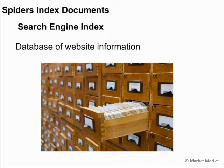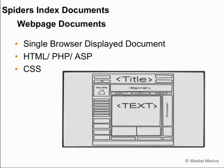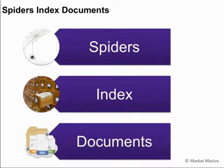That database of information is called the search engine index — you'll hear it called the index, the database, Google's database, and so on. The individual documents indexed within the database consist of different file types: it could be an HTML document, CSS, an Adobe PDF portable document file, or other file types. Spiders collect and organize a multitude of documents, and indexing those documents is the first step in the process.